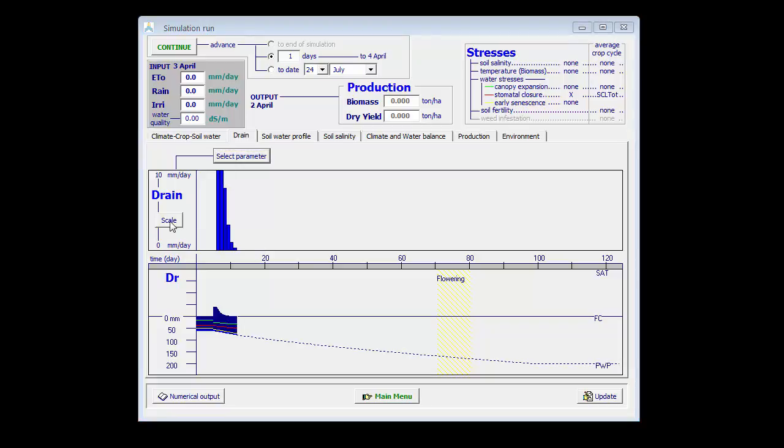Let me adjust the scale to a maximum of 20 mm and I assign it. And now we can see that indeed after that irrigation of 40 mm, it takes a few days before the soil is back at field capacity.